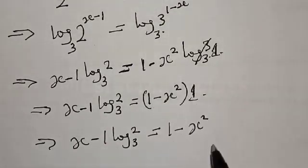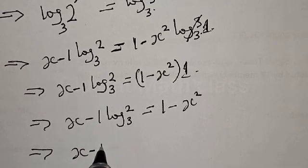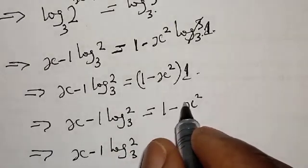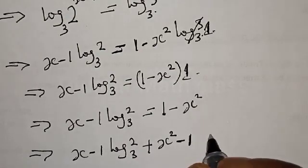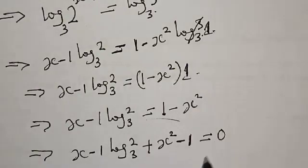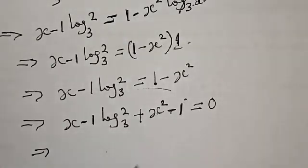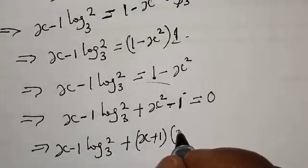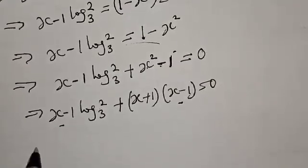Multiplying through by 1 gives 1 minus x squared. Bringing minus x squared to the other side gives plus x squared, and bringing 1 to the other side gives minus 1, all equal to 0. Now from here, x squared minus 1 is a difference of two squares. This can be expressed as x minus 1 times log 2 base 3, plus x plus 1 times x minus 1, all equal to 0. So x minus 1 is a common factor and can be factored out.